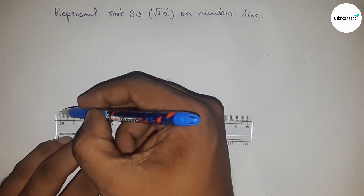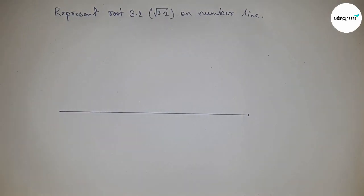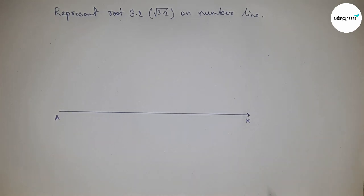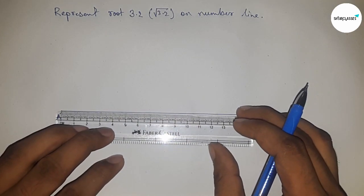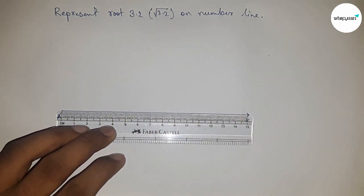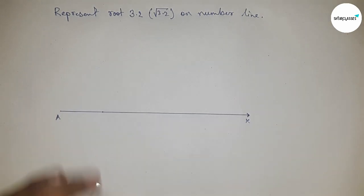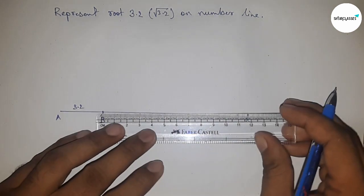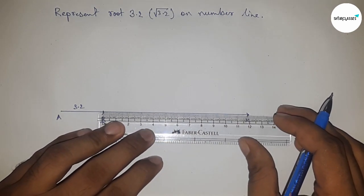First of all, draw a line of any length here—this is the AX line. Next, take a distance of 3.2 centimeters using a scale, so AB equals 3.2 centimeters.